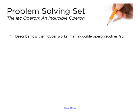Hello and welcome to the problem solving set on the LAC operon. Question 1 asks us to describe how the inducer works in an inducible operon such as LAC. The inducer in this case is allolactose, which is just an isomer of lactose. An isomer means they have the same molecular formula but different arrangement of atoms, giving it a different structure and therefore a different function.